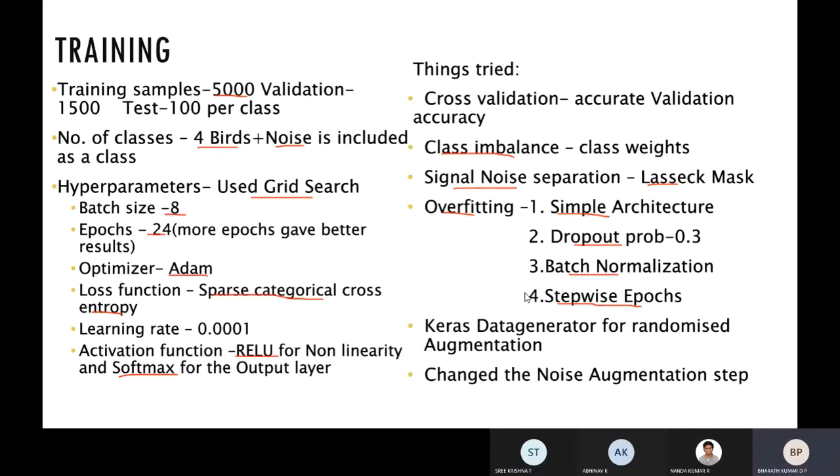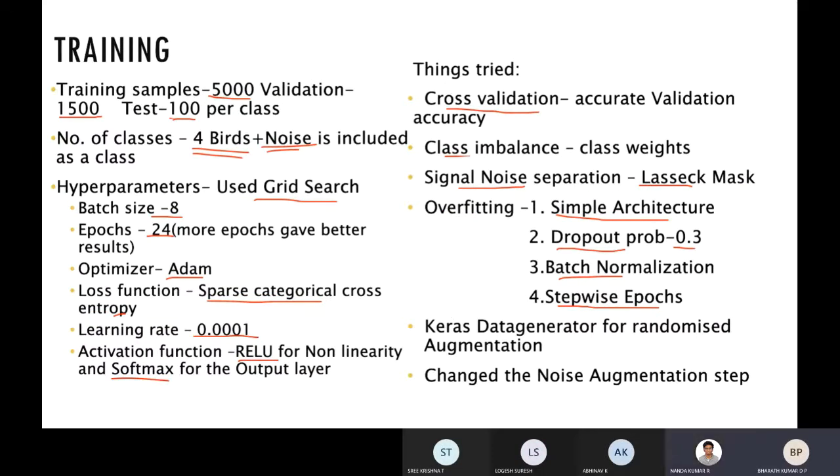I'll go over some things we did differently compared to similar projects. We created something called the sound data generator that handled all our data augmentation. It was derived from the image data generator class of the Keras library. Image data generator lets us augment images in real time, such as image rotation, flipping, etc., giving entirely unique data each epoch.